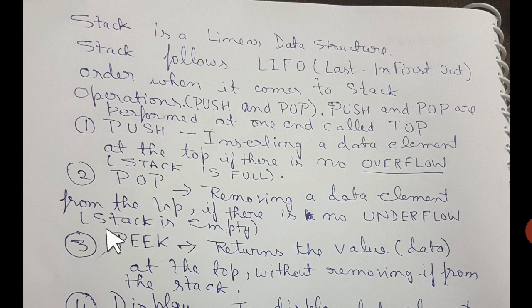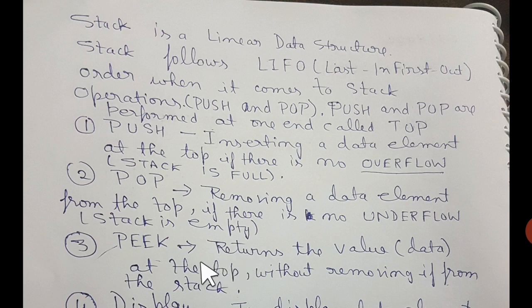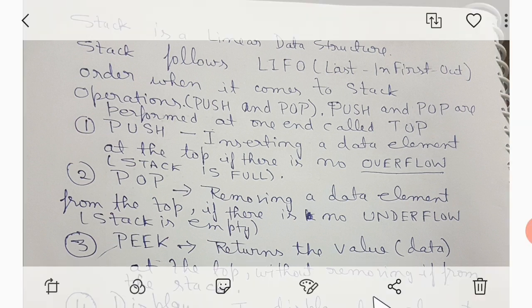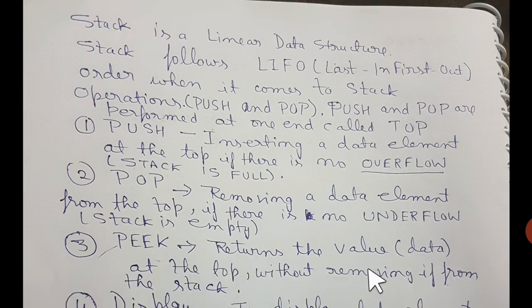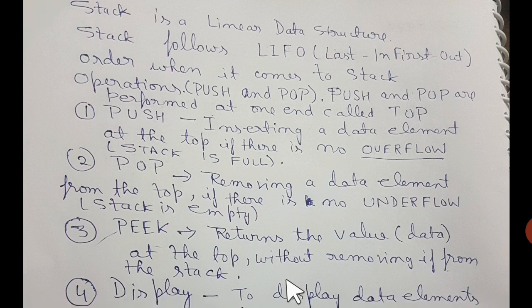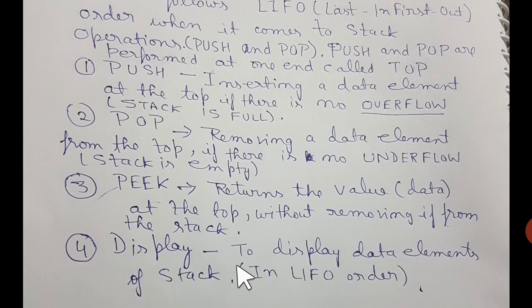Underflow simply means the stack is empty — when there is no element, what will you pop? Peek returns the value or data available at the top without removing it from the stack. It simply returns from the function what is available at the top.